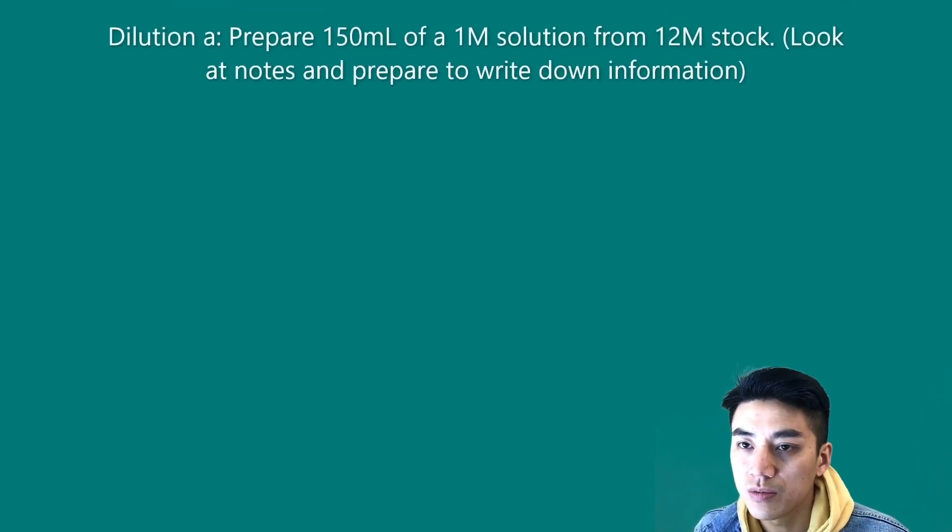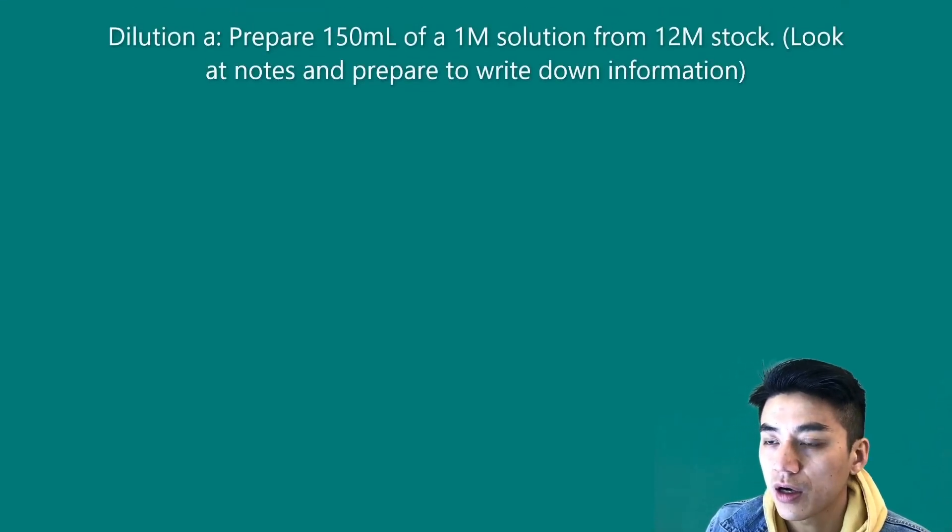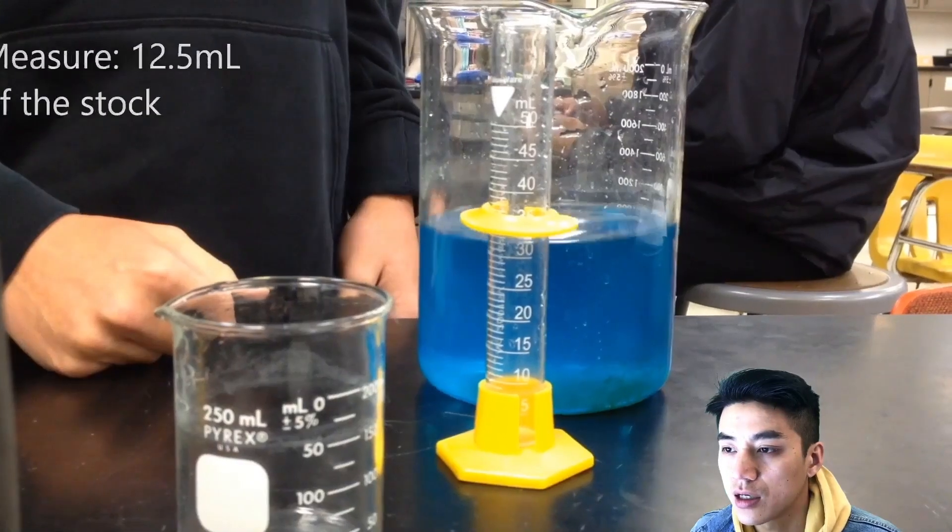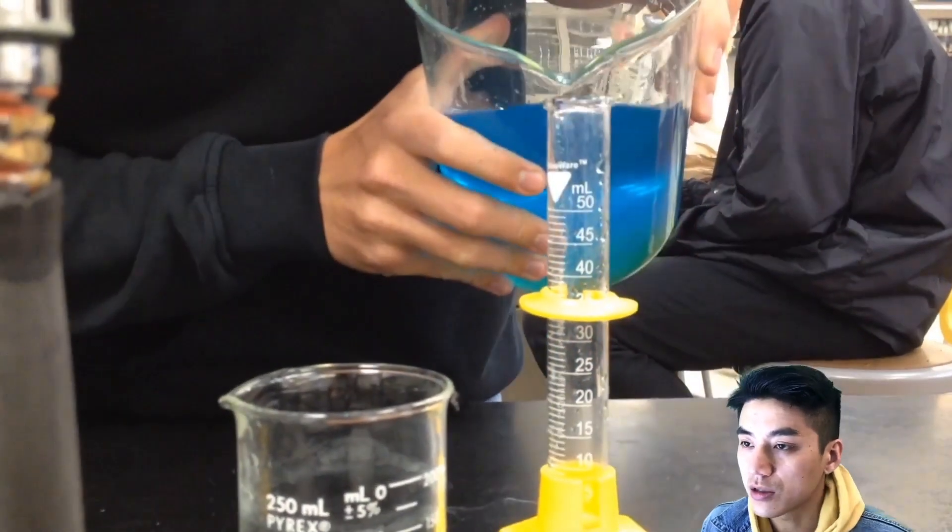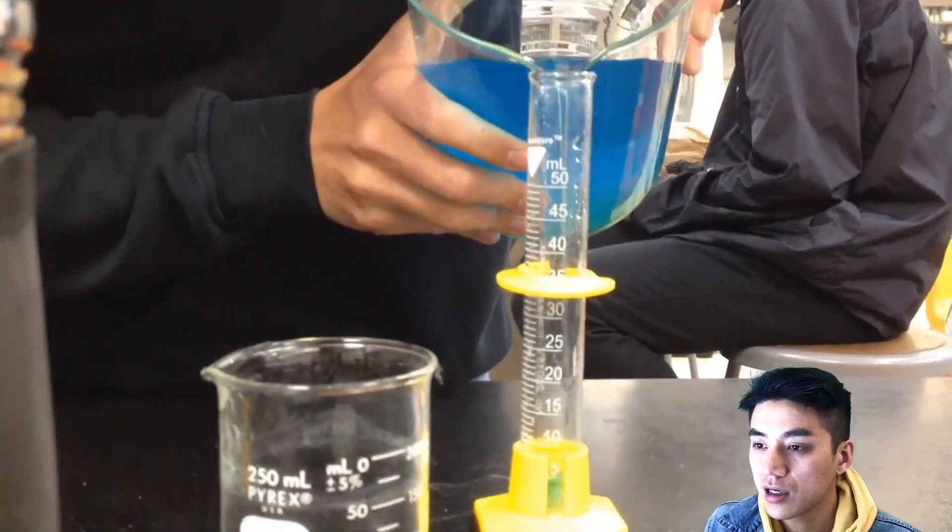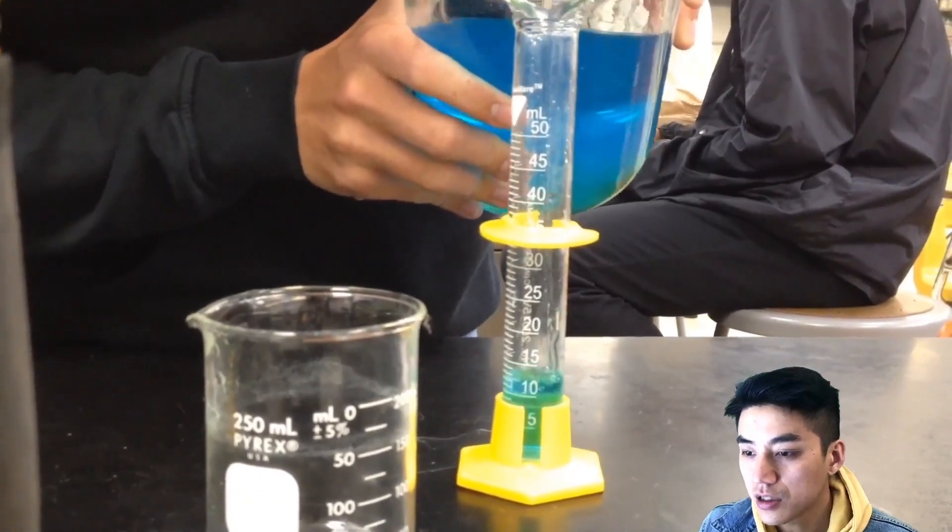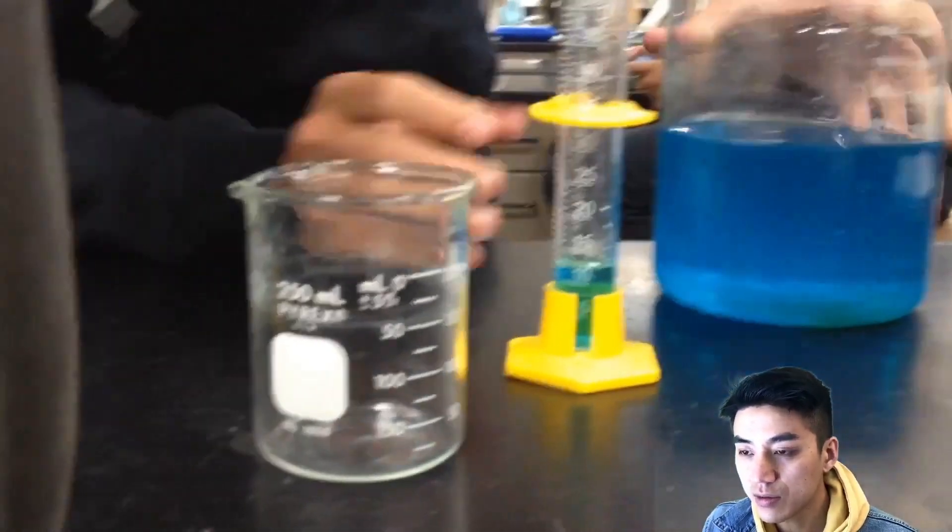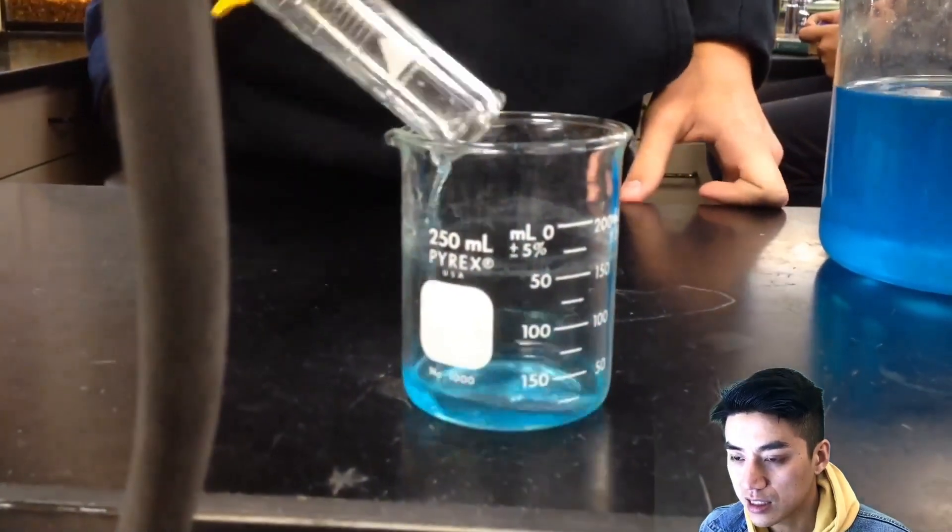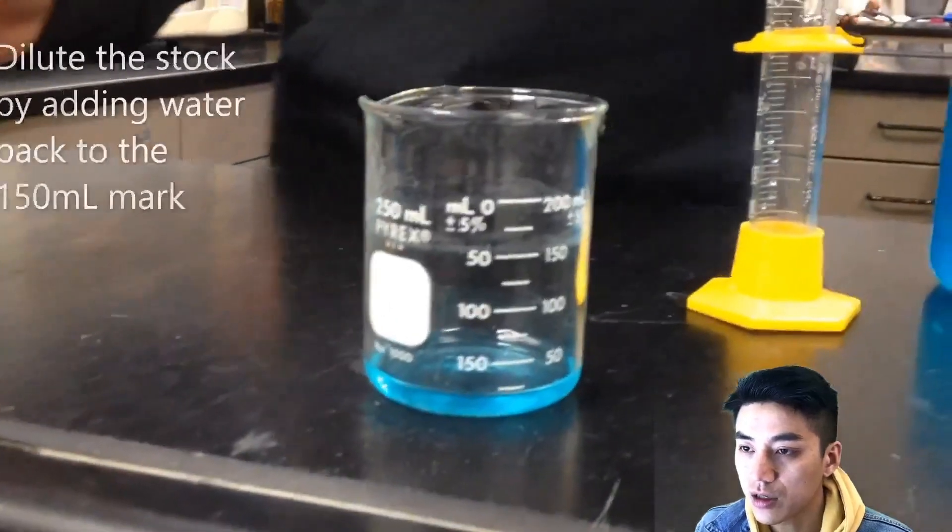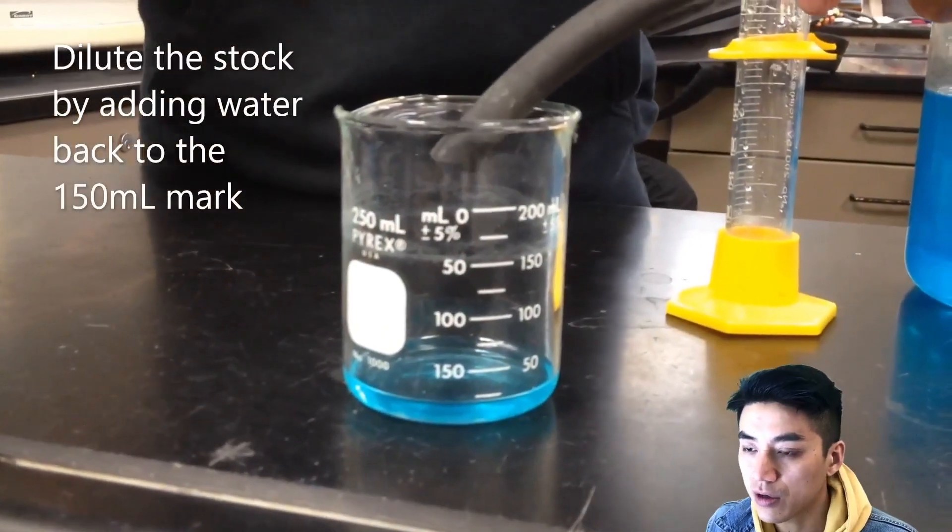Here's our first problem, dilution A. Prepare 150 mils of a 1 molar solution from the stock. I'll show you what it looks like first. So I had my student measure out 12 and a half milliliters of the stock. I'll show you how to get the numbers in just a moment. We'll see what it looks like first. So that's just 12 and a half mils of the original stock. It's going to go in that little beaker. That's where we're using to prepare the solution.